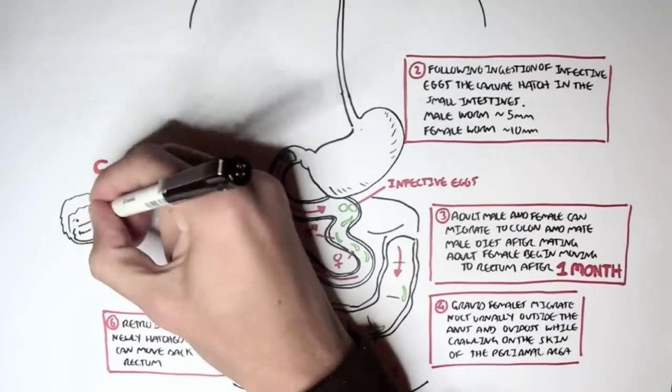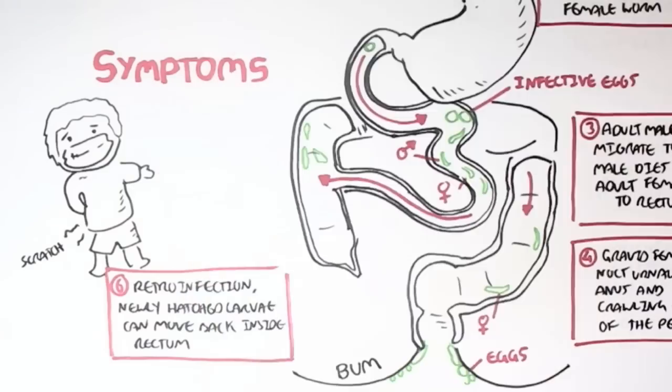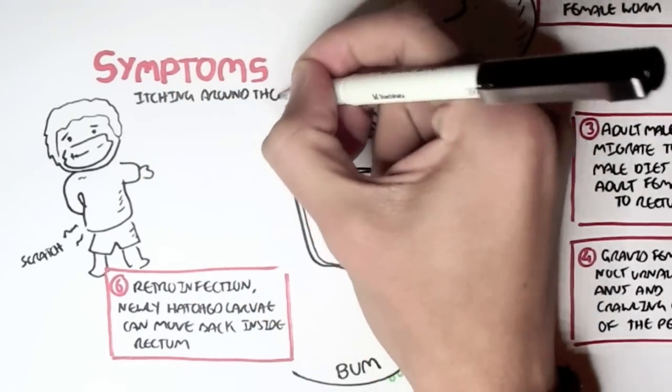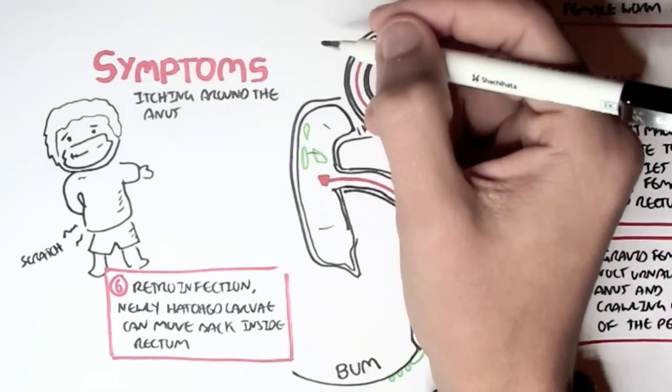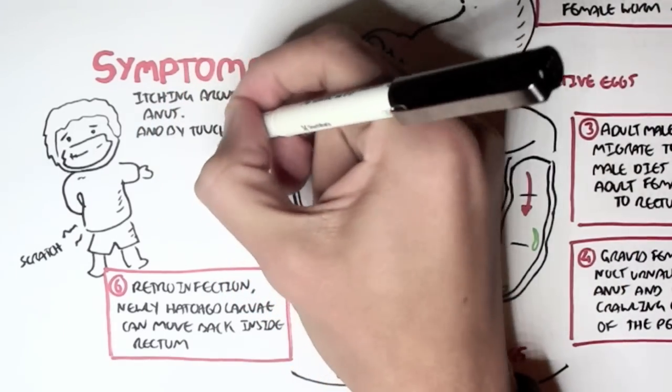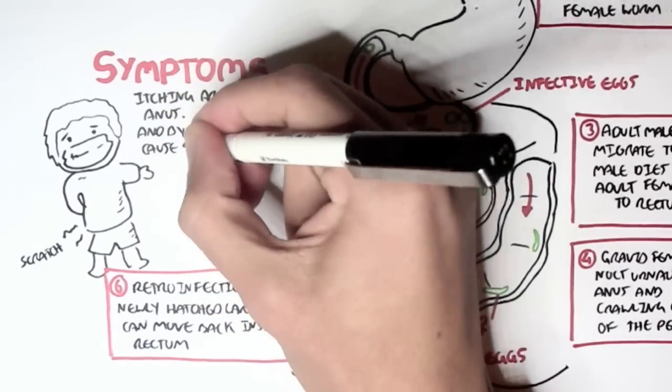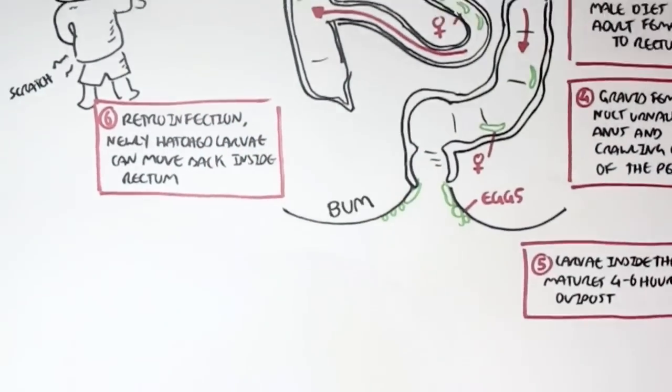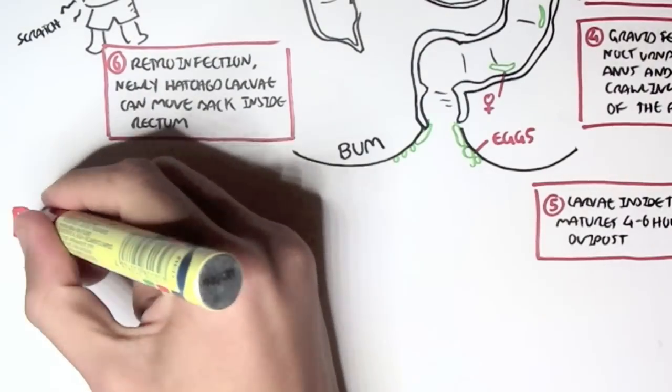So obviously the symptoms would include itching around the anus, which is quite normal. And also by touching the anus and scratching it, you can cause contamination. And it's so easy to contaminate things with these eggs because they're so small.